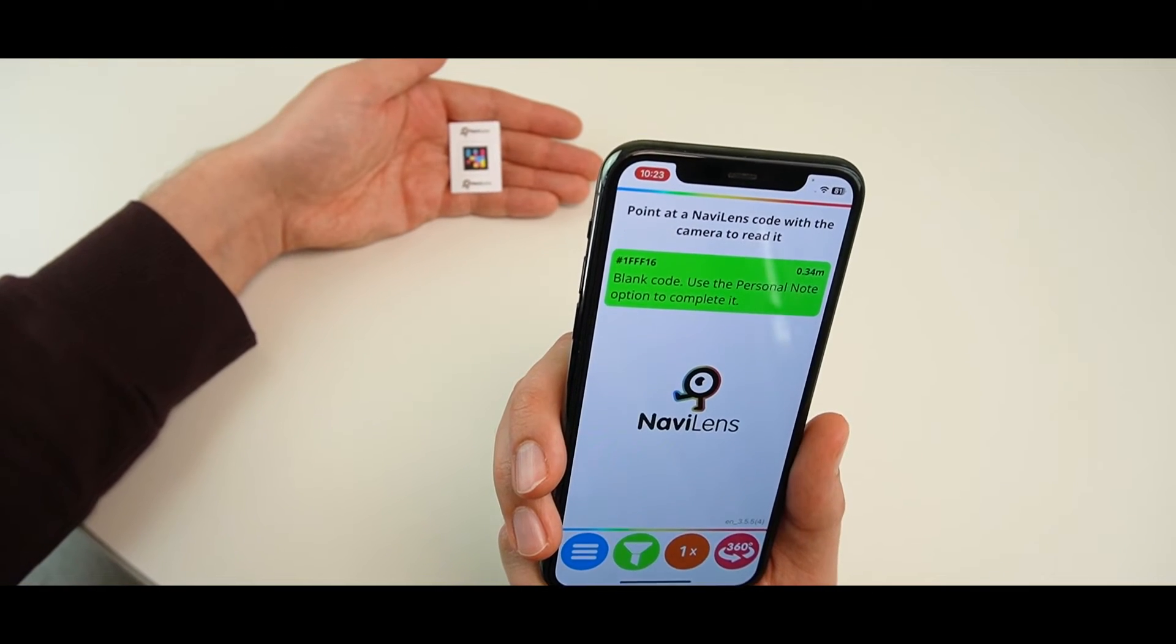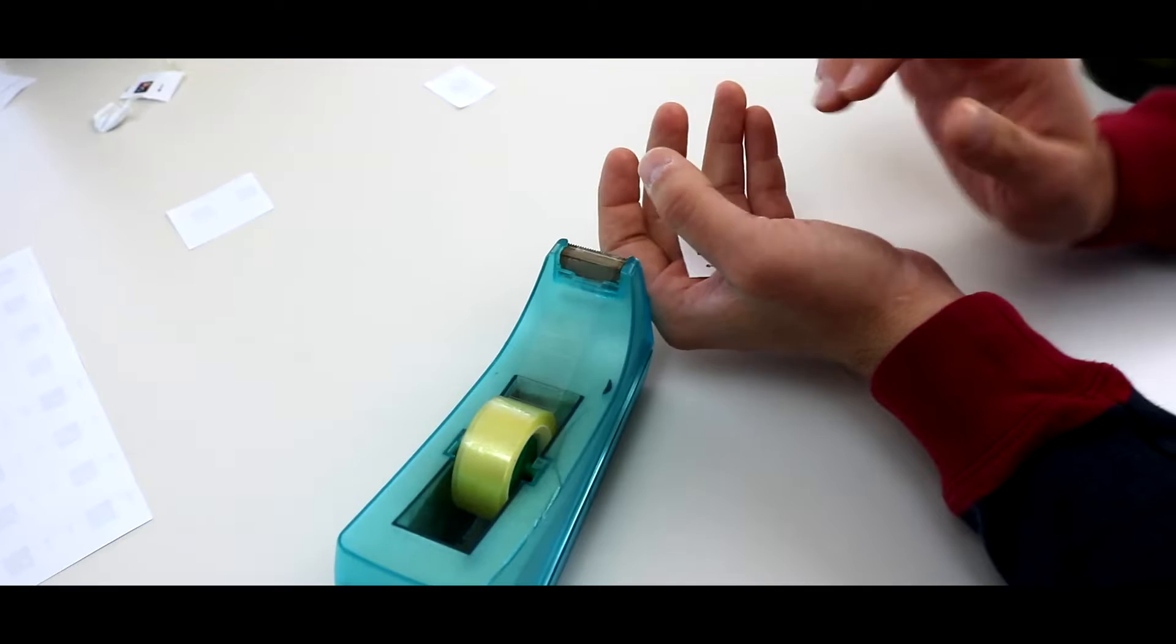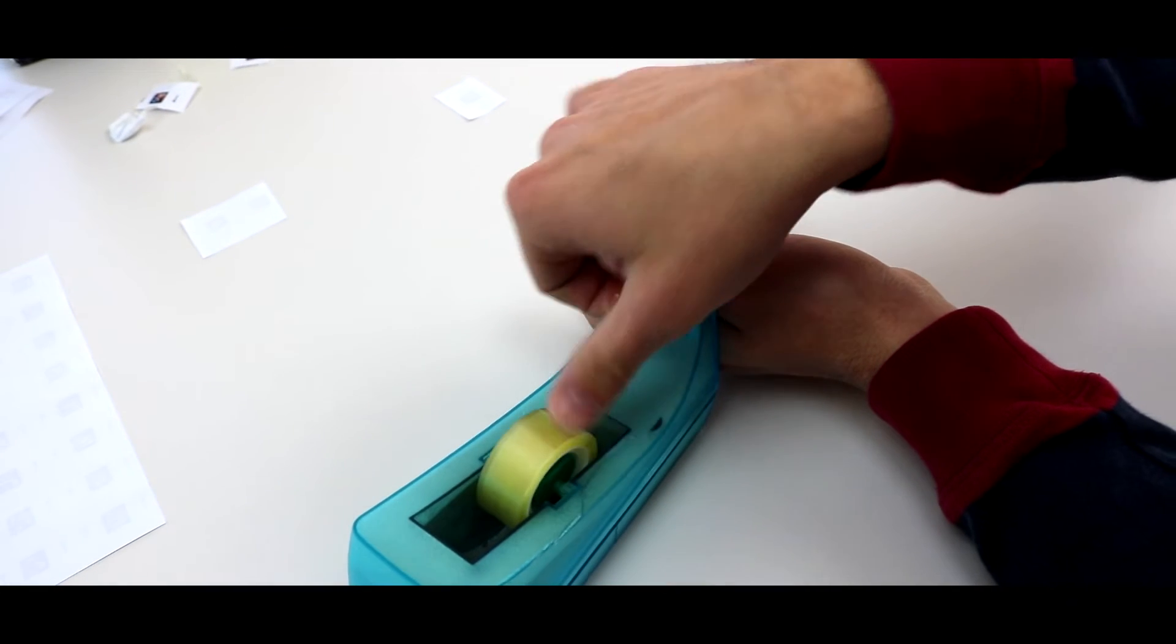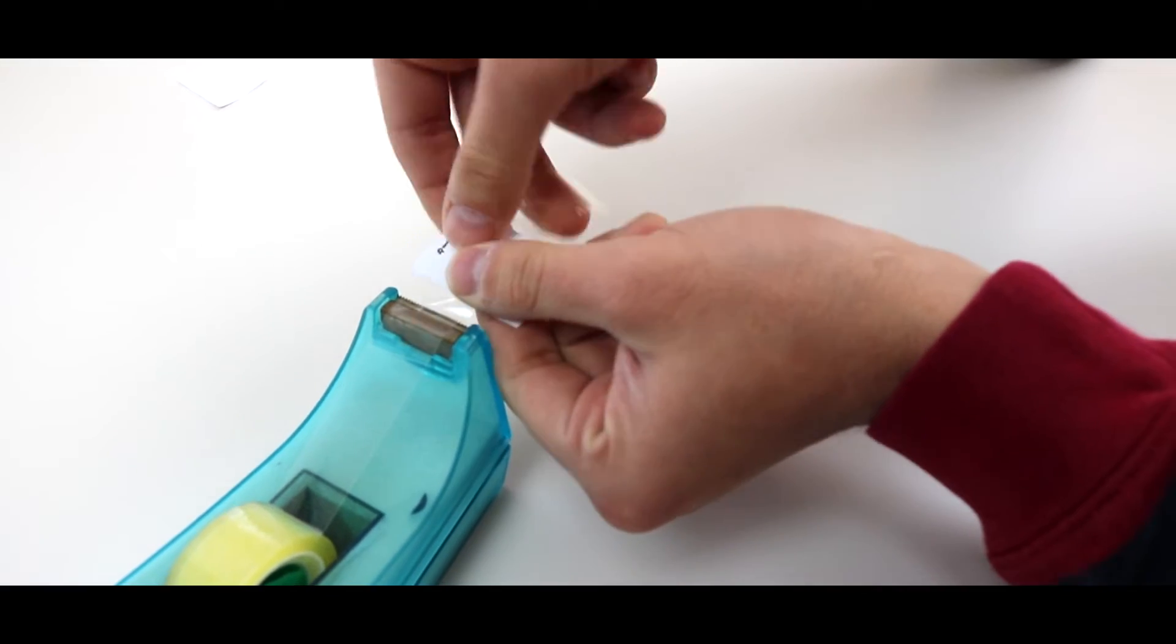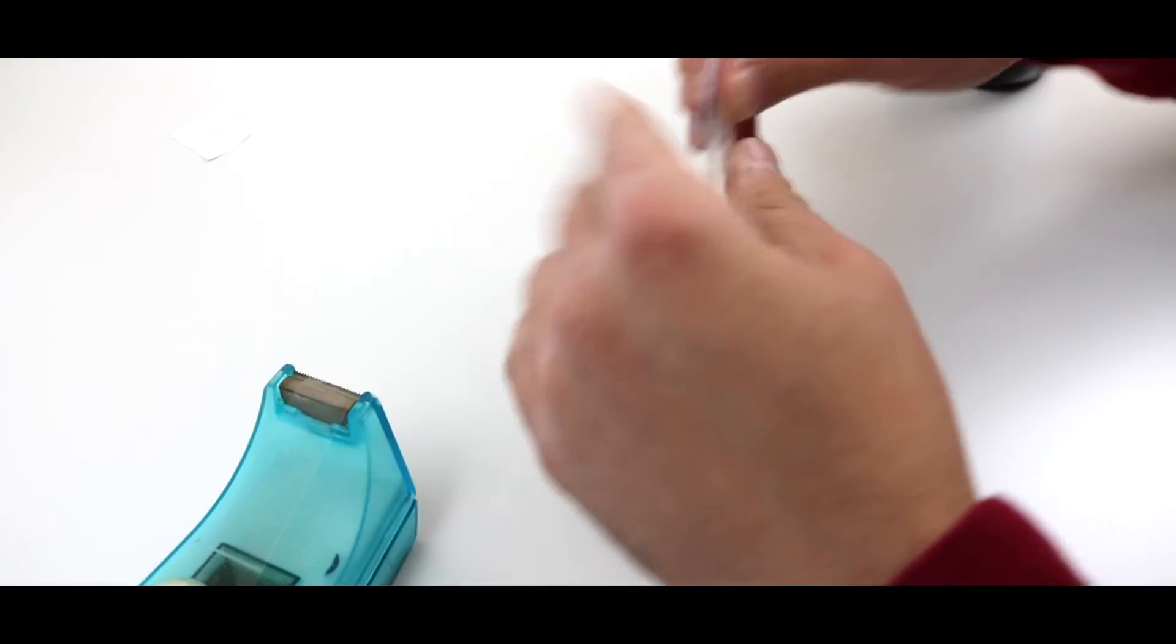Blank code. Use the personal note option to complete it. You can stick the codes wherever you like, even using sellotape. Make sure the code is visible so it can be scanned later using the camera on your mobile phone.